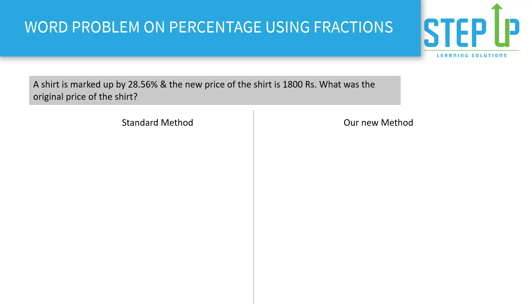Now I'll also take an example of a word problem and show you in this typical exam problem how you can save a lot of time. I'll first show you the standard method and then I'll show you our new method so that you understand the ease and how much time saving you can really do. While this may take five seconds for me to answer in the exam, if you go by the standard method you may take one minute and still calculate the wrong answer. So a shirt is marked up by 28.56 percent and the new price of the shirt is 1800. They're asking what was the original price of the shirt.